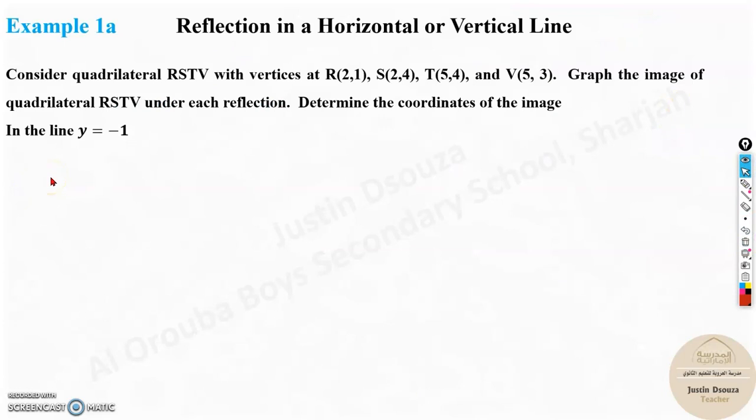Here we have a problem: reflection in a horizontal or vertical line. Consider quadrilateral RSTV with vertices at R(2,1), S(2,4), T(5,4), and V(5,3). We need to graph the image of quadrilateral RSTV under each reflection and determine the coordinates of the image. In the first case, they have asked to reflect it along y equals -1. It is very crucial and important that you draw a figure.